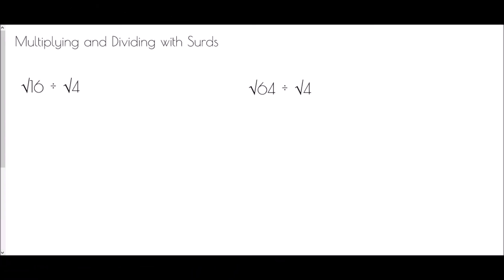So how about dividing with surds? Let's do the same as before and see if we can work out the answers. Root 16 is 4, root 4 is 2, and 4 divided by 2 is 2. Now 2 is the square root of 4. So how could I have gotten from root 16 divided by root 4 to an answer of root 4?